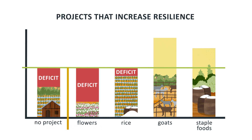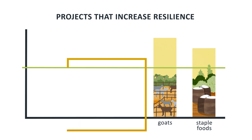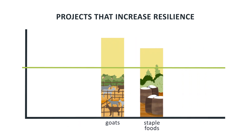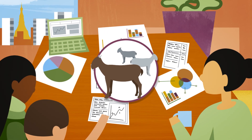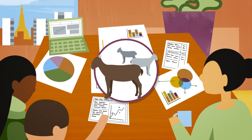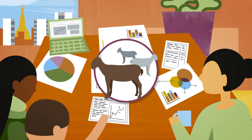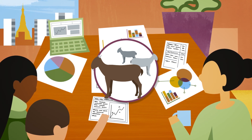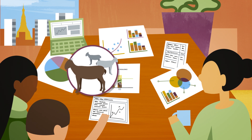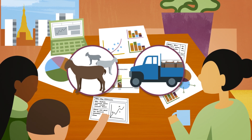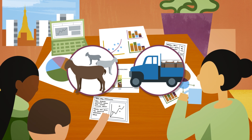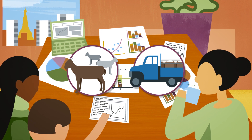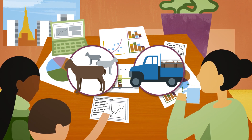It's now easy to rule out the two projects which would leave households with a deficit in a drought. Either of the other projects would be viable. Ultimately, the organisation decides to go with goat trading because it fits with their expertise. However, they also decide to use the results from the modelling to advocate to the government to improve the efficiency of the staple food market. This sort of analysis is crucial if we are to design projects which will actually increase people's resilience and avoid doing them harm.